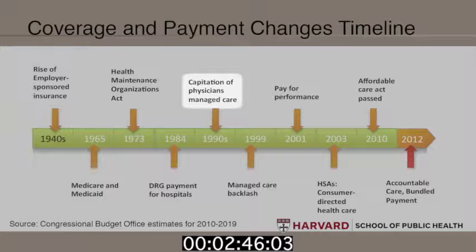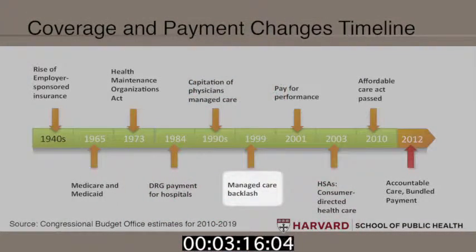Next, there was a move to evolve managed care and turn over some of the responsibility for controlling costs to physicians. In the 1990s, there was the rise of capitated payment for physicians. All of this is really about trying to find the right way to balance improved access to health care, cost control, and maintenance or improvement of the quality of care. Capitation payment was about controlling cost, and there were concerns that it went too far — that people weren't getting access to needed care. We saw the managed care backlash of the late 1990s, followed by an emphasis on payment for improving quality: pay for performance.